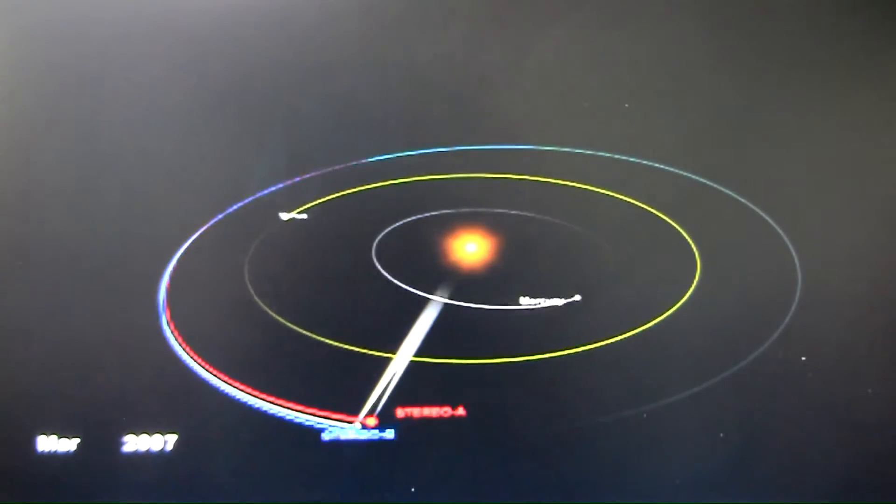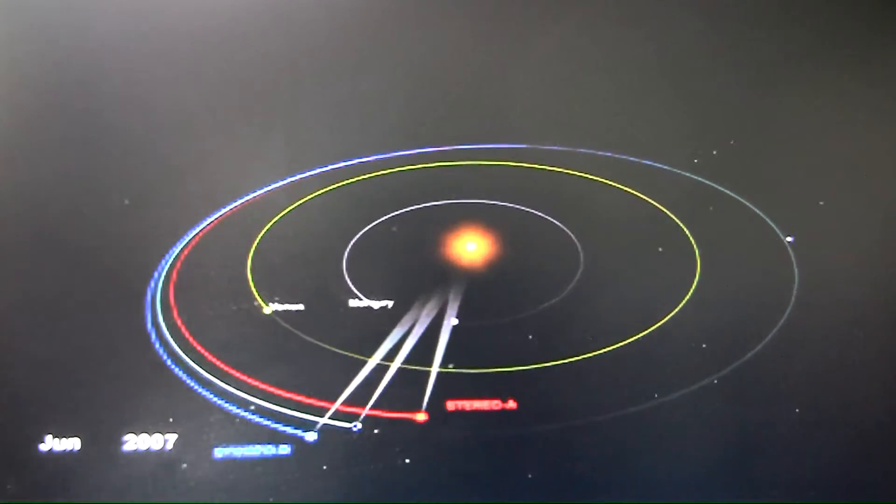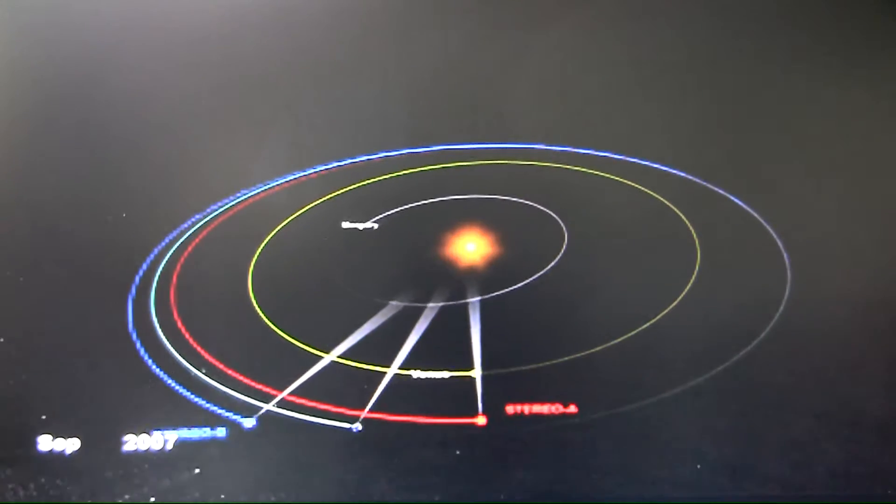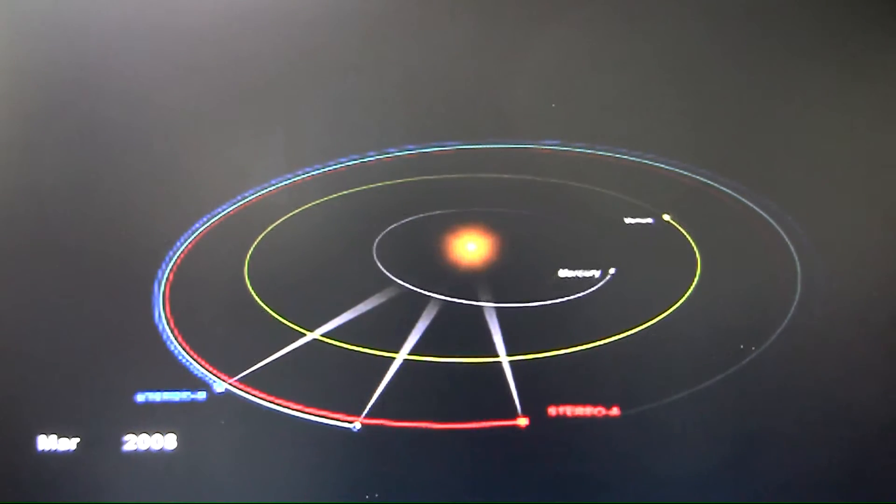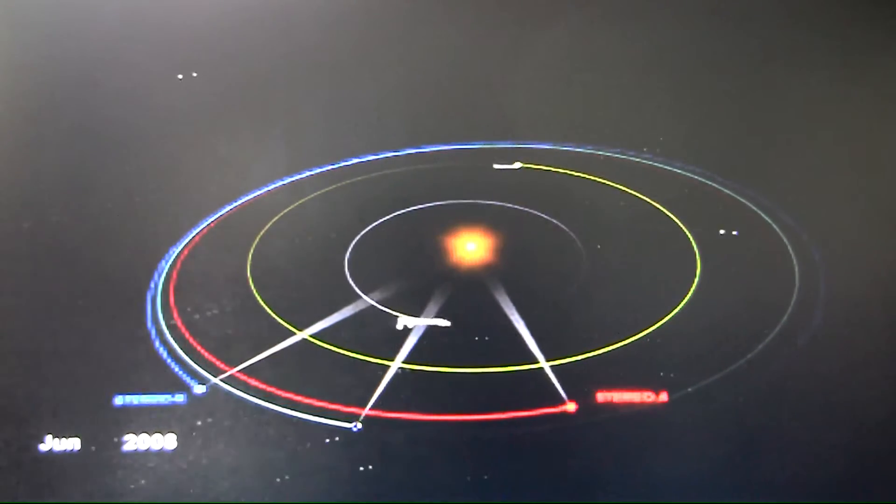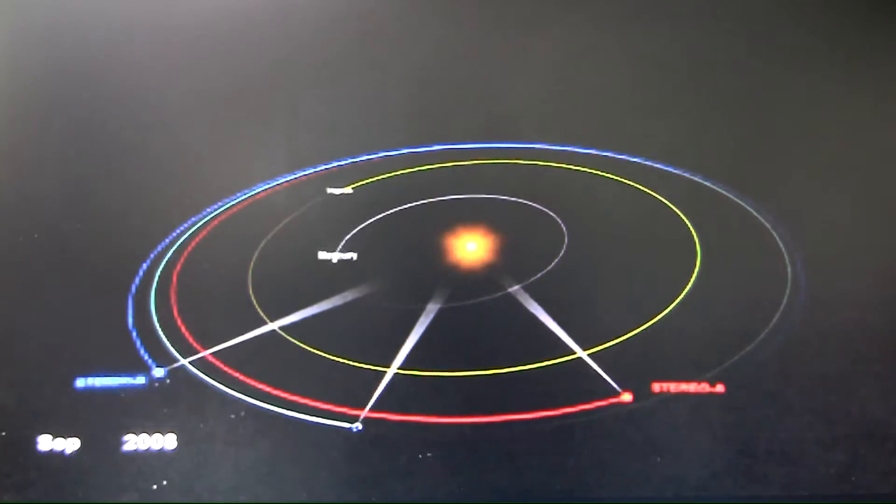In 2006, NASA launched the Solar Terrestrial Relations Observatory, or STEREO spacecraft. Over the last four years, the two spacecraft have slowly made their way along Earth's orbit, with STEREO A advancing ahead and STEREO B falling behind.